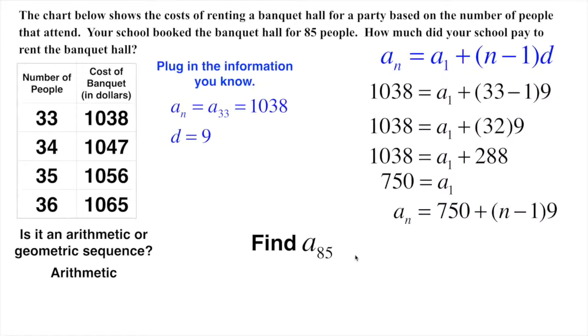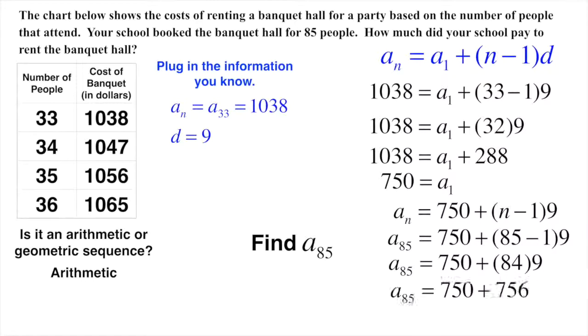So now all I'm going to do is plug in 85 right here for n. I plug it in both places, and I don't know what a of 85 is. That's what I'm trying to find out. That's what we're going to find out as we do this process. I've got 85 minus 1 is just plain old 84. 84 times 9 should give me 756. Now I have 750 plus 756, which would give me a grand total of 1506.